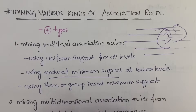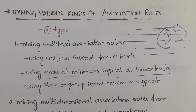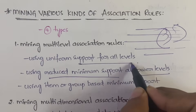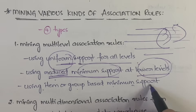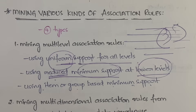The second approach is reduced minimum support at lower levels. This means each level of abstraction will have a different minimum support. We set up different minimum support levels for each level based on priority or importance — lower levels are given lower minimum support. Even after giving a lower minimum support, if lower levels still can't satisfy it, we can remove those lower levels.